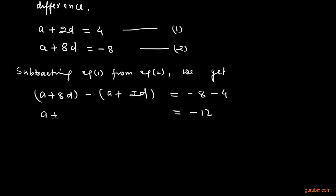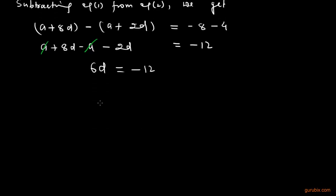And here we get A plus 8D minus A minus 2D. Now we can cancel out this minus A from this A. We can subtract this 2D from 8D. We get 6D, and here is minus 12. This means 6D is equal to minus 12. Therefore, D is equal to minus 2. So we found out the value of D and that is equal to minus 2.